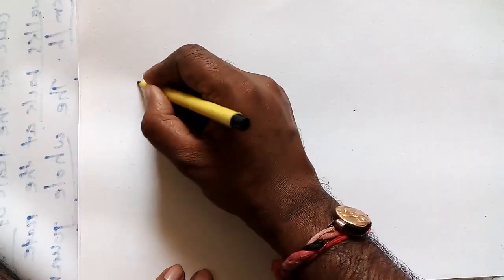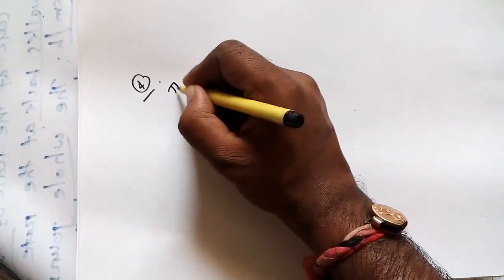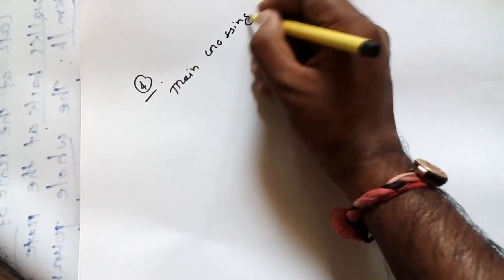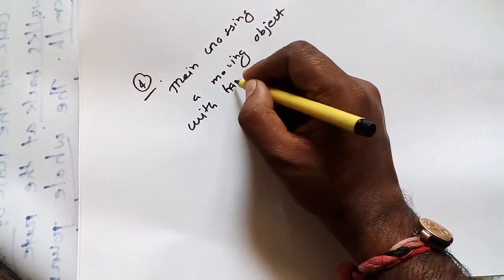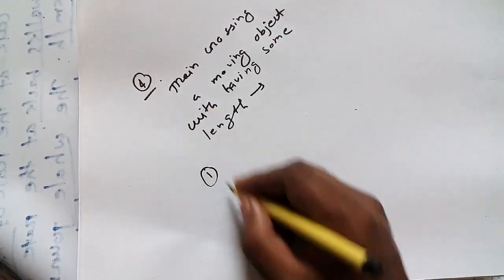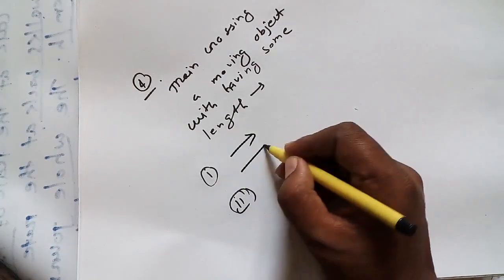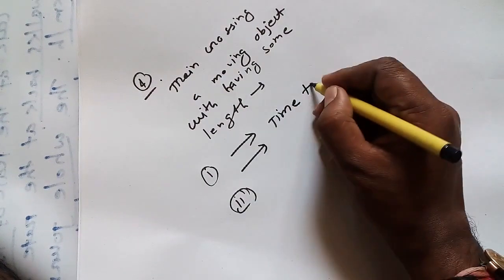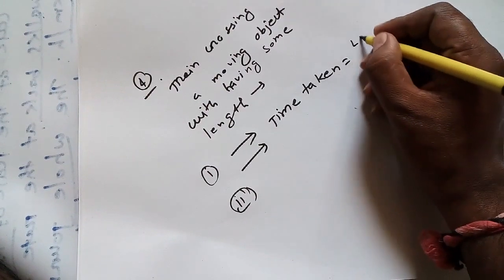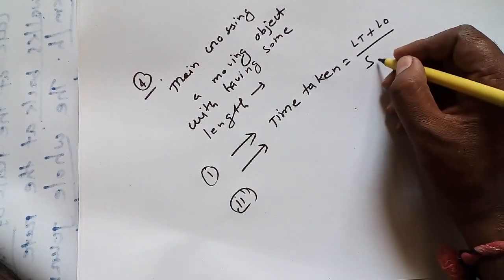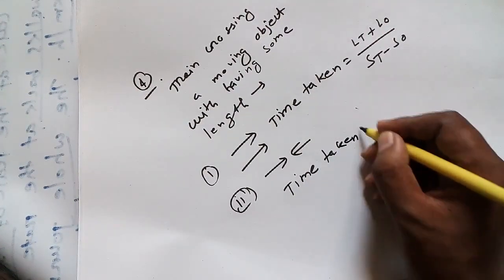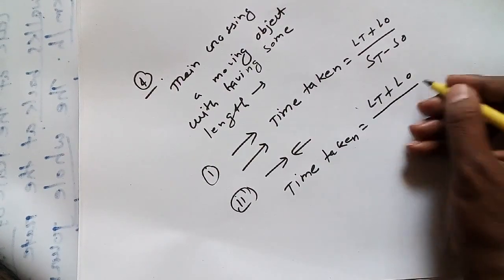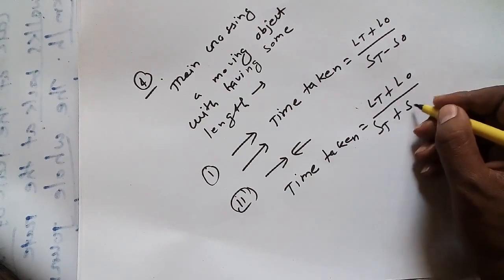The fourth concept: train crossing a moving object with having some length. Two conditions apply. First, if the train and object are in the same direction, time taken is equal to length of the train plus length of the object, upon speed of the train minus speed of the object. Second, if both are in opposite directions, time taken is equal to length of the train plus length of the object, upon speed of the train plus speed of the object.